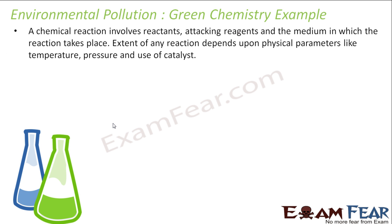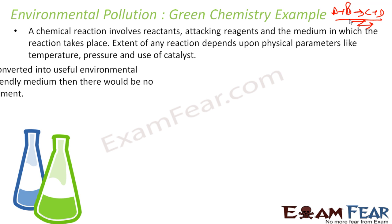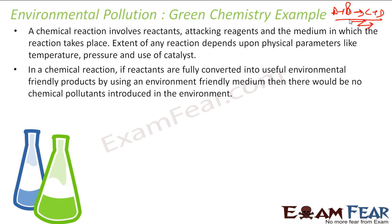Let's give some examples of green chemistry. In a chemical reaction A + B → C + D, a lot of parameters come into play: the catalyst, the temperature, the pressure. What if we can tweak these parameters and make sure the reaction happens fast, with minimum waste, and non-toxic materials are used? Green chemistry is all about tweaking reactions and finding better ways to make sure we get environmentally friendly products.